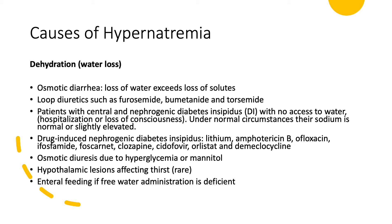Medications can cause nephrogenic DI. The top of the list by far is lithium, but other medications can do it: Amphotericin B, ofloxacin, foscarnet, clozapine, cidofovir, orlistat (used for obesity), and demeclocycline — which was used in the past for treatment of SIADH and should not be used for that purpose anymore.